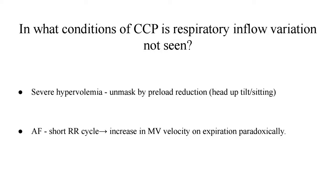An important point: in what conditions of chronic constrictive pericarditis is respiratory inflow variation not seen? First, in severe hypervolemia — there is so much excess preload that the variation in response to respiration is not seen; this can be unmasked by preload reduction such as head-up tilt or sitting. Second, in atrial fibrillation — with a short RR cycle, there can be a paradoxical increase in mitral valve velocity on expiration instead of the expected decrease.